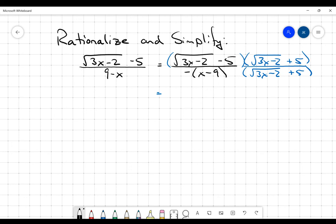So the square of the square root of 3x minus 2 is just going to be 3x minus 2, minus 2. The square of 5 is going to be 25, so it's going to be minus 25 out of the back end there.